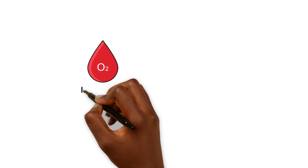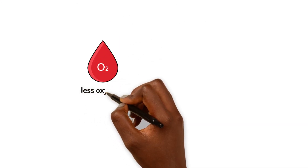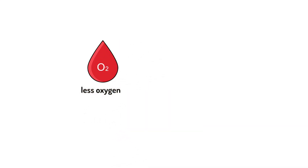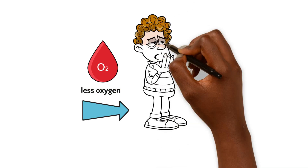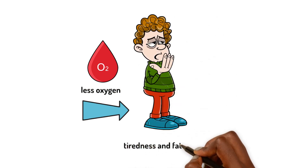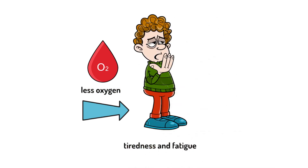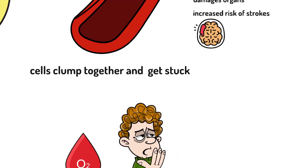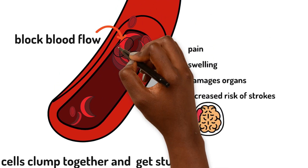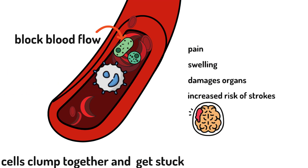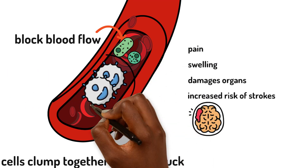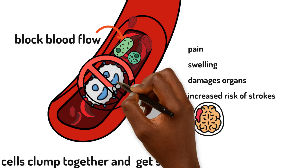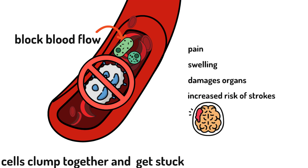swelling and damage to the organs as well as increasing the risk of strokes. This can also reduce the amount of oxygen available to the body, causing tiredness and fatigue just as in anemia. Infections are more likely because white blood cells cannot reach the site of infection.